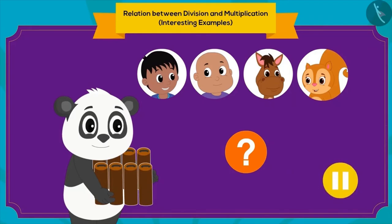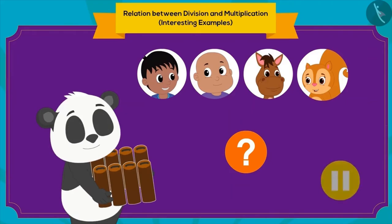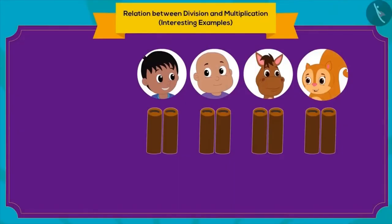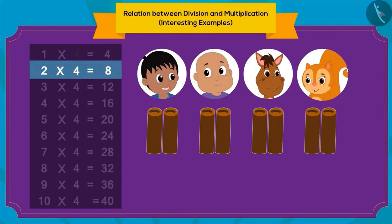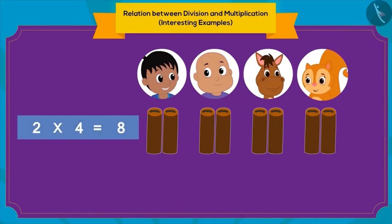If you want, you can pause the video here to think of the answer. Excellent! Your answer is absolutely correct! We need to look at the table of four, and look up the place where eight appears. Four times two is eight. So, the answer to this part is two.